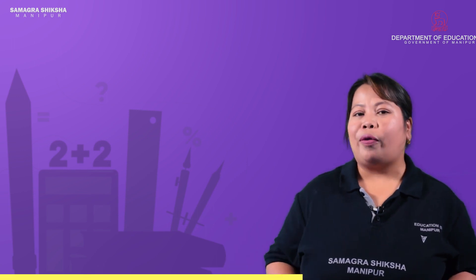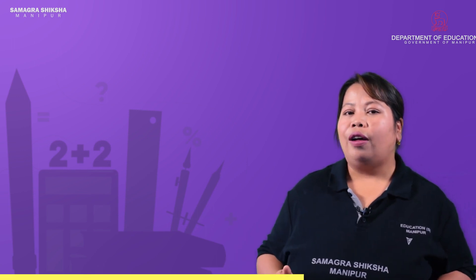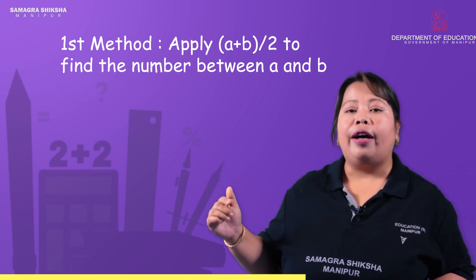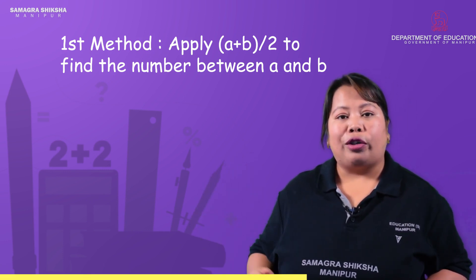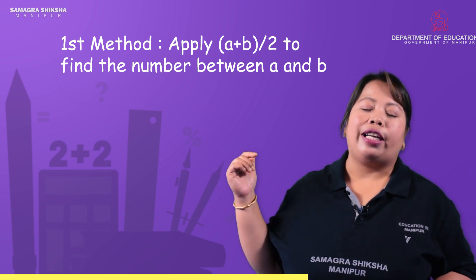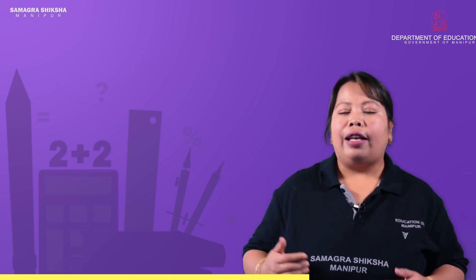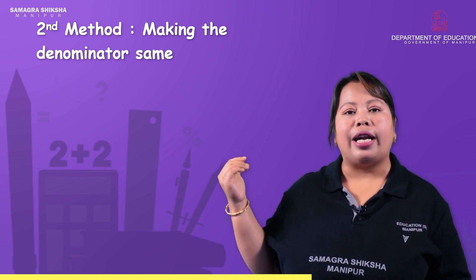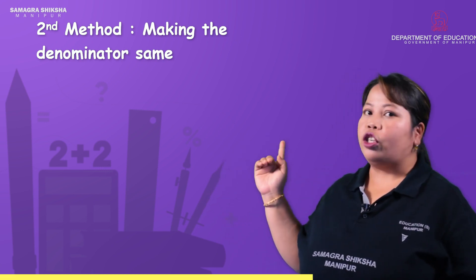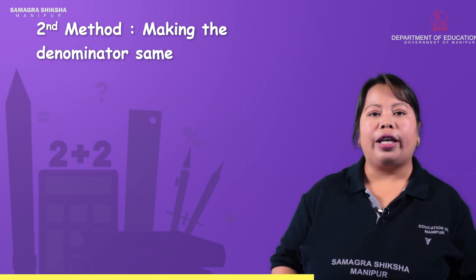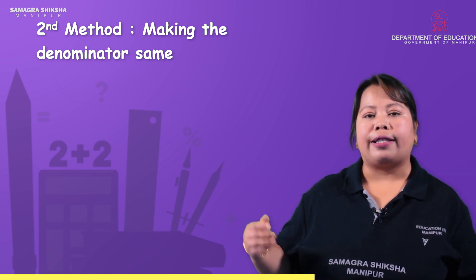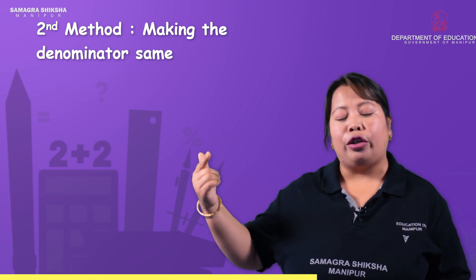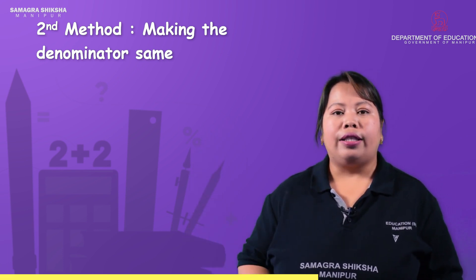Now we have method number 2. In this method, we make the denominators the same. We use the LCM to create a common denominator. The rational number is expressed as P over Q, and we use the common denominator to find rational numbers between two given values.